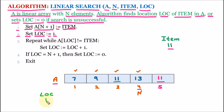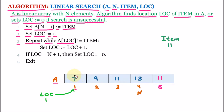In line number two, we set LOC equal to 1, so the value of LOC is 1, meaning it is at the first position. In line number three of the algorithm we say: Repeat WHILE A[LOC] — the value of LOC is 1, so A[1] is 7. We are checking that 7 is not equal to item, which is 11. Since 7 ≠ 11 is true, we go to the inner portion and set LOC equal to LOC + 1, incrementing LOC from 1 to 2.